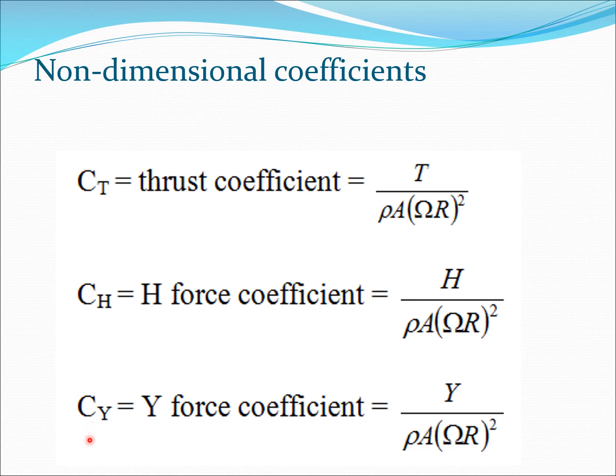Now let us again define some non-dimensional quantities. We typically don't carry these forces by themselves because, remember, the forces would be in some unit like Newton. Therefore, what we do is we create non-dimensional coefficients. So CT is the non-dimensional thrust coefficient, we have CH, the H force coefficient, and we have CY, the Y force coefficient. All these forces are essentially defined divided by ρA(ΩR)².